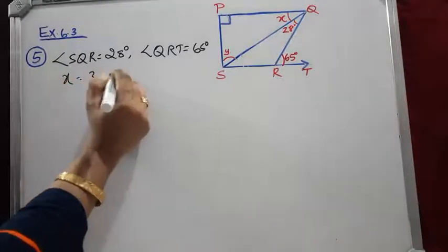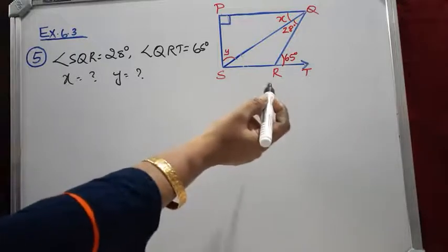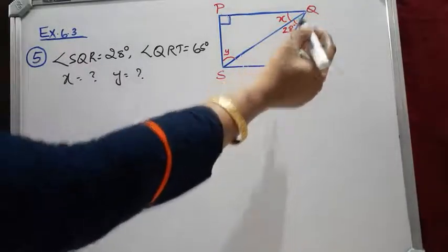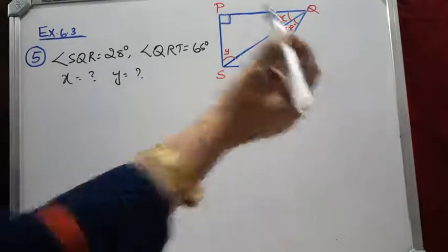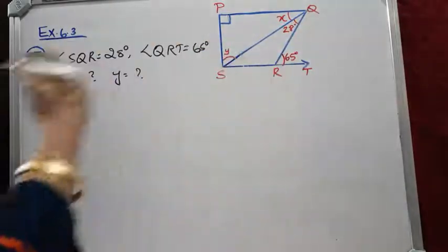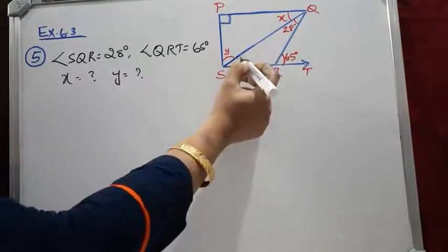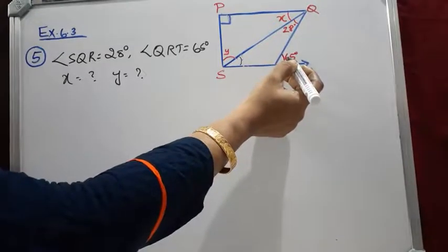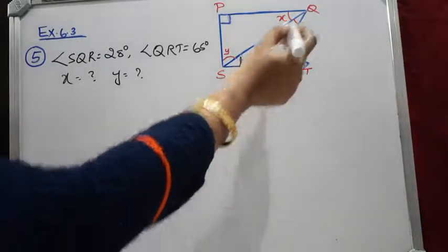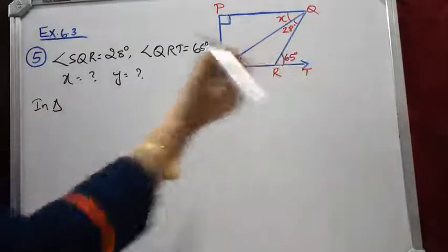Here you can see triangle QSR. Angle QRT is the exterior angle of triangle QSR, so we can apply the exterior angle property or exterior angle theorem to find this value — that means this angle plus this angle equals 65 degrees. We are going to apply this to find angle QSR.